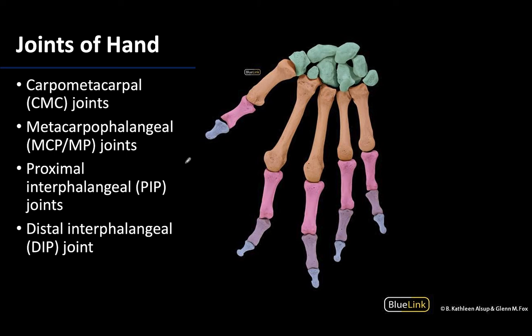Moving to the joints of the hand — these are so much easier to conceptualize when looking at the bone. There will of course be ligaments and tendons throughout this region, but if you can understand what bones are articulating to form these joints we'll be very pleased. Starting proximally, there are the carpometacarpal joints, of which there are five, and these are formed by the distal row of the carpal bones articulating with the metacarpals. The joint between that distal row and the metacarpals will be your carpometacarpal or CMC joints.